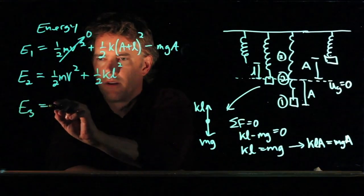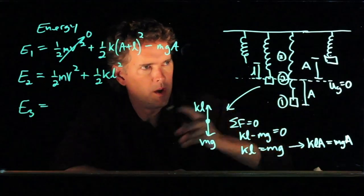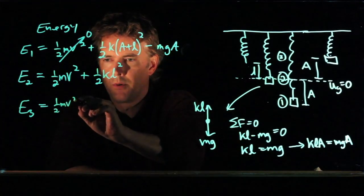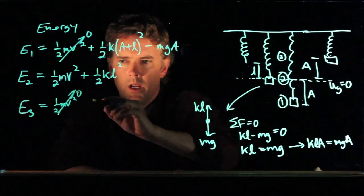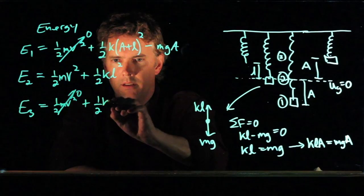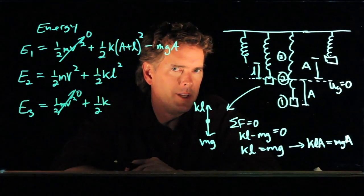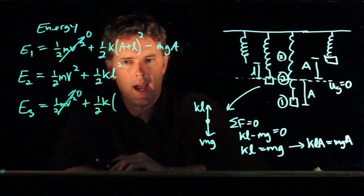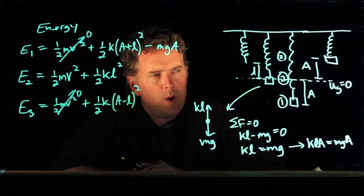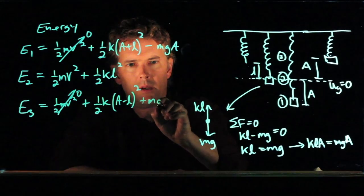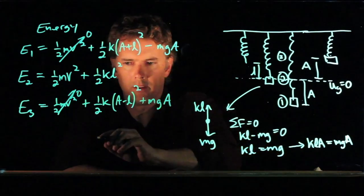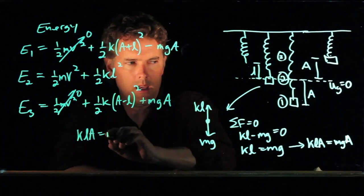What about E3? E3 is when the block is moved all the way up to the top of its motion. And let's see what we have for those terms. We don't have any kinetic energy. It's come to rest up there, so that one's zero. We might have a little bit of stretch in that spring still. And the amount of stretch is going to be the difference between A and L. So we have to subtract those two. And we have some gravitational potential energy, because it's up at a height A. And so we have to add MGA. And now we're going to take advantage of this little last statement here. KLA equals MGA.